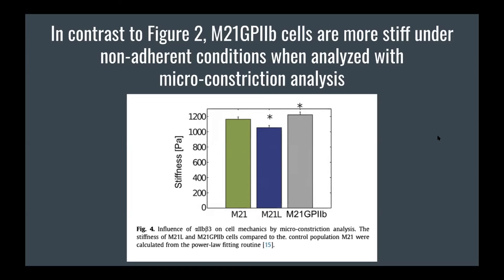It's not entirely clear why they included this figure since it contradicts their earlier claims — perhaps it was requested by reviewers. One reason may be that they stated early in the paper they don't fully understand this relationship yet, so they included the conflicting information for future researchers. It's also a different way to measure stiffness, so further refinement may resolve it — it is good to be transparent.